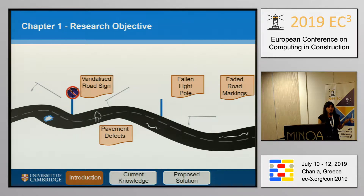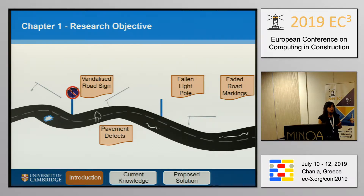If we have any vandalized road signs, any faded pavement markings, any cracks or potholes on the pavement, or anything related to the road network, I'm trying to check how I can classify these assets and the defects of these assets in order to help inspectors check this very quickly in order to save some time.